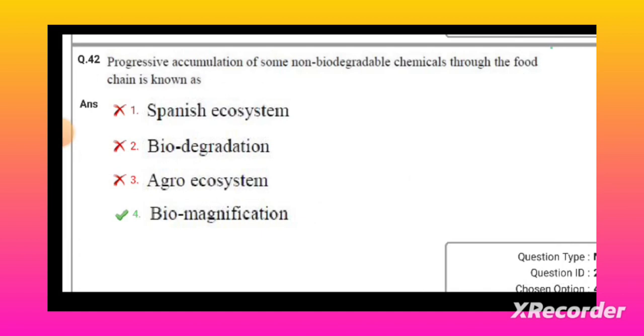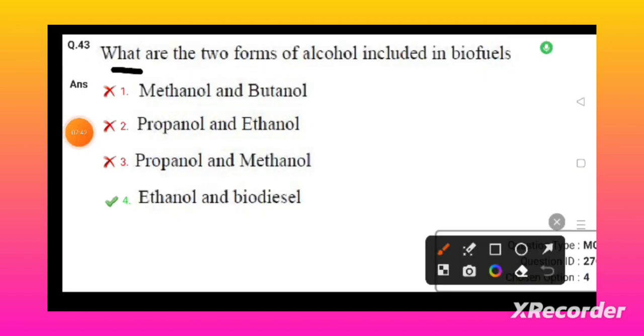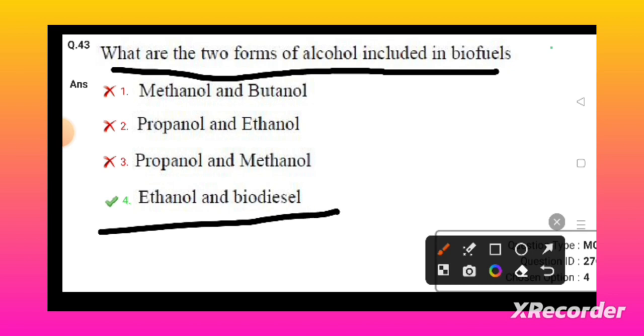What are the two forms of alcohol included in the biofuels? Ethanol and biodiesel - they are both forms of alcohol included in the biofuels.